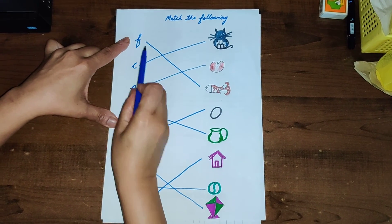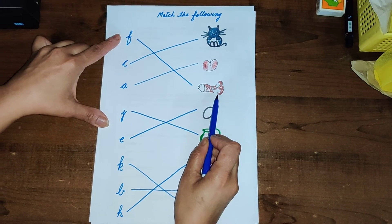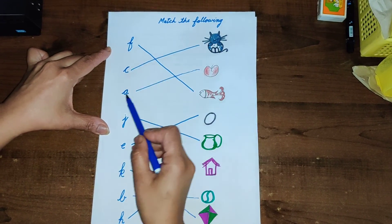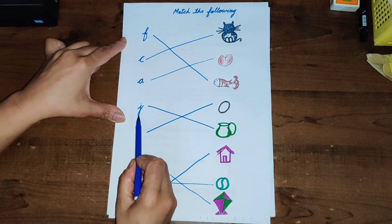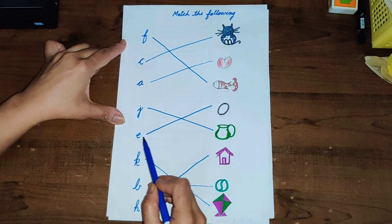So it's easy and interesting to know. Now let's revise it again. F for fish, C for cat, A for apple, J for jug.